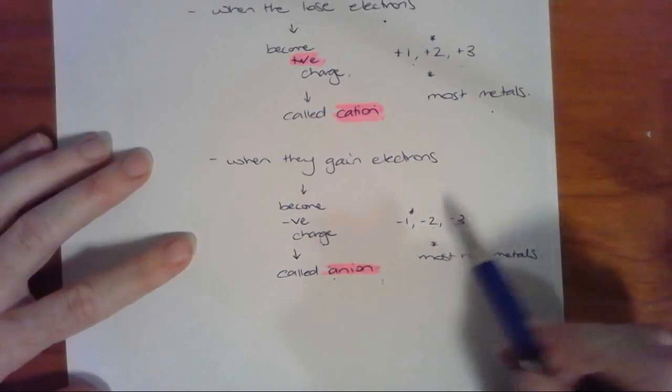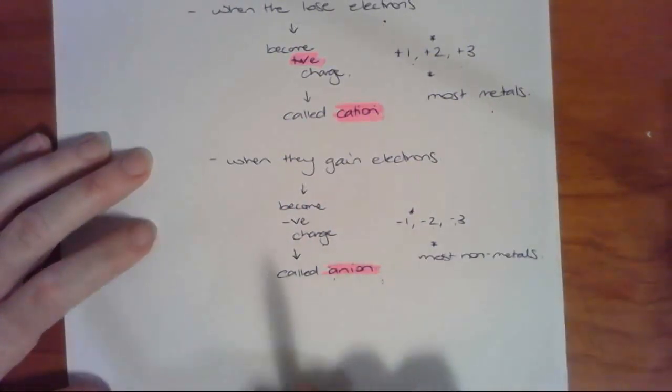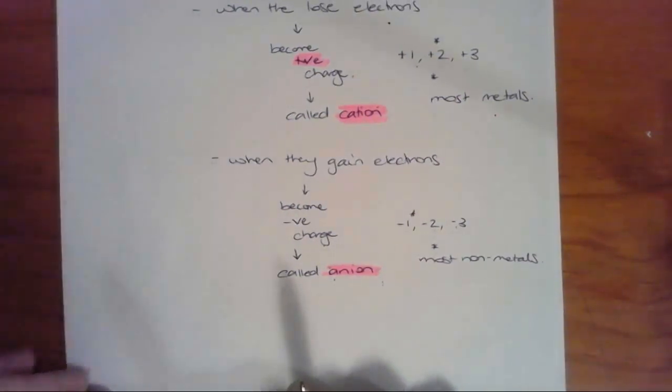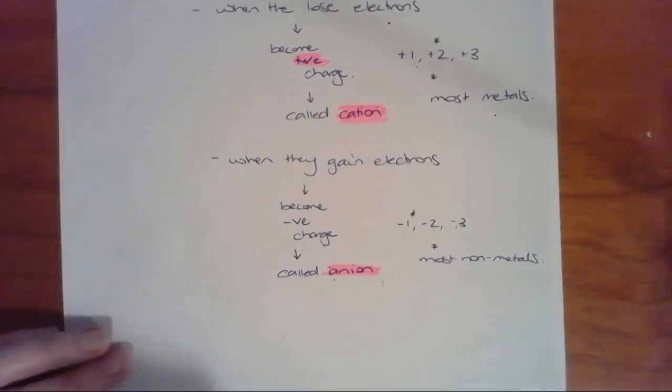When you do an activity soon on the periodic table where you've got to identify the ionic charge of different atoms, you'll do that in groups and that will show a certain pattern as well.